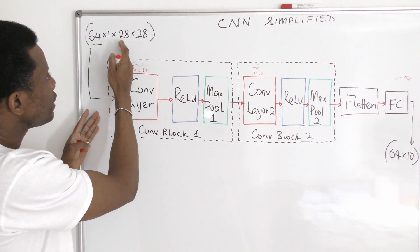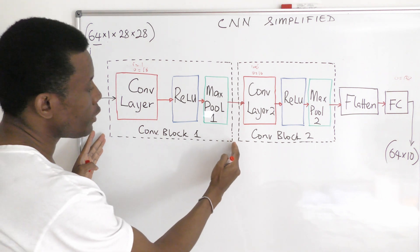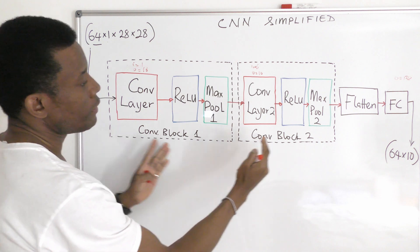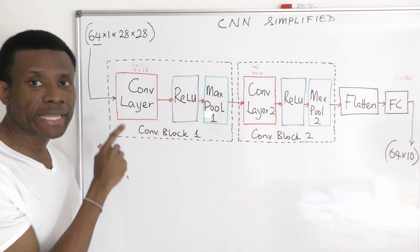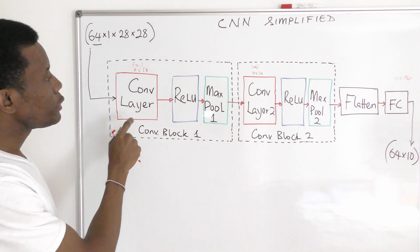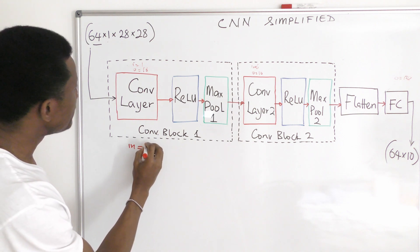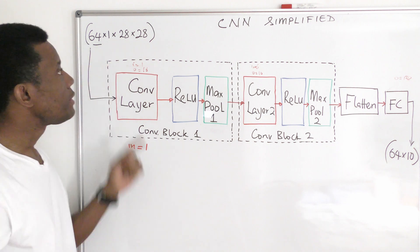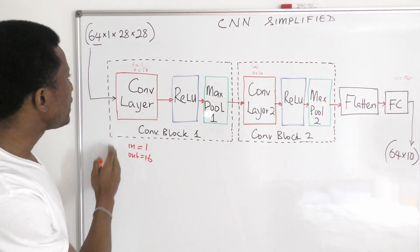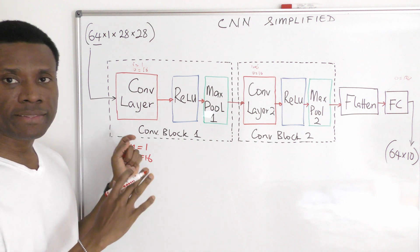Now let's look at what happens when the image of this dimension goes into convolutional layer 1. We have convolutional blocks — the same set of components that repeats. The first convolutional layer has properties that affect the input dimension: input channel and output channel. In this scenario, the input channel is 1, exactly matching the input dimension, and the output channel is 16. When the image goes into this layer, the channel size adjusts from 1 to 16, and every other dimension remains the same.